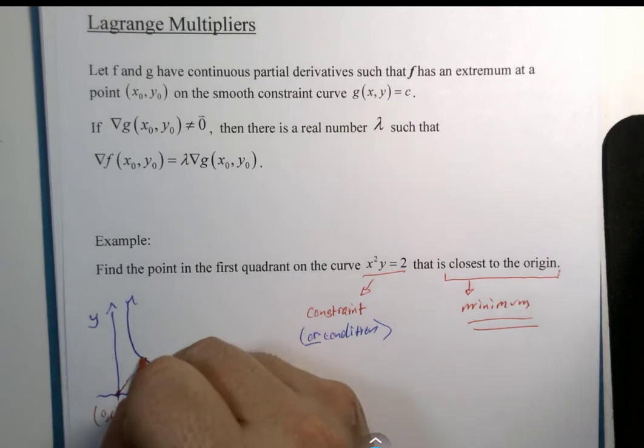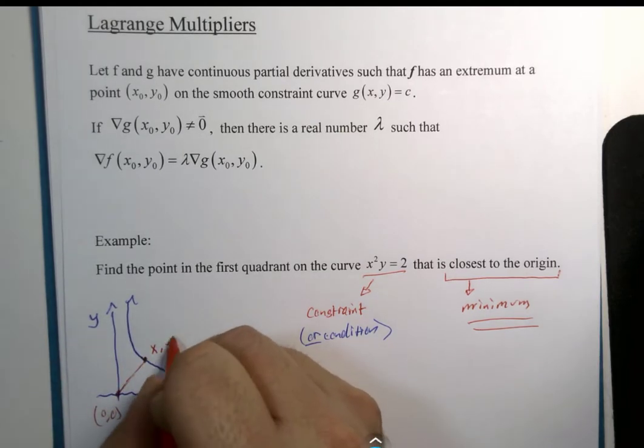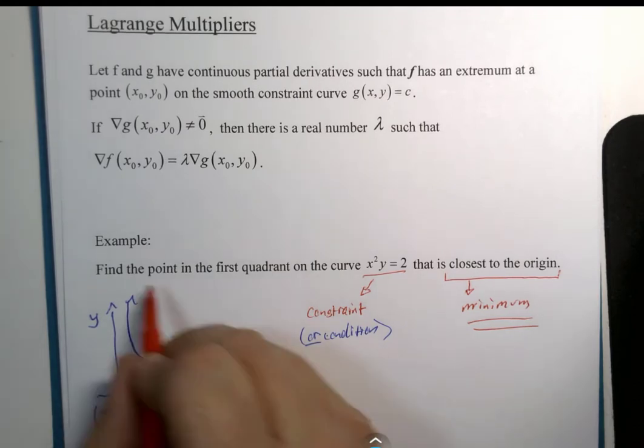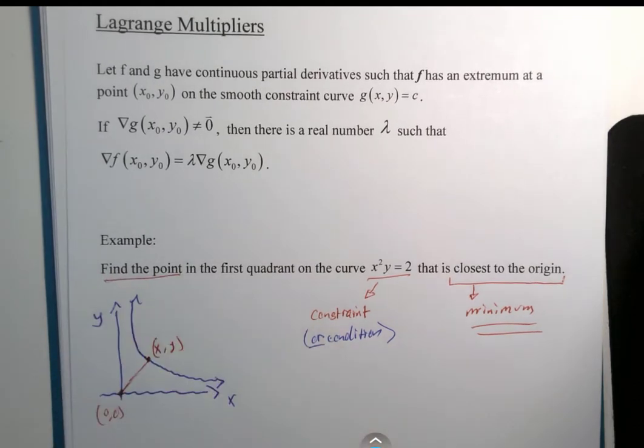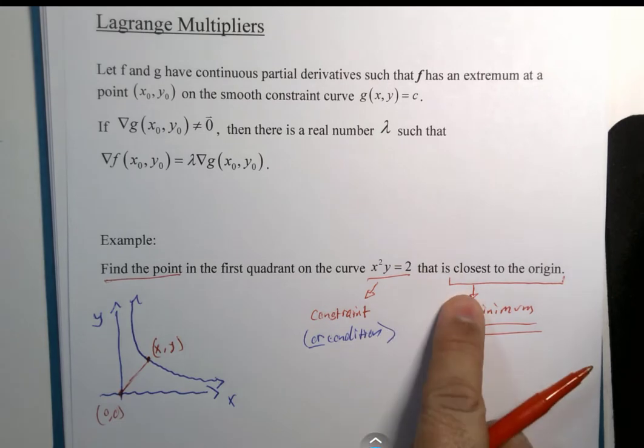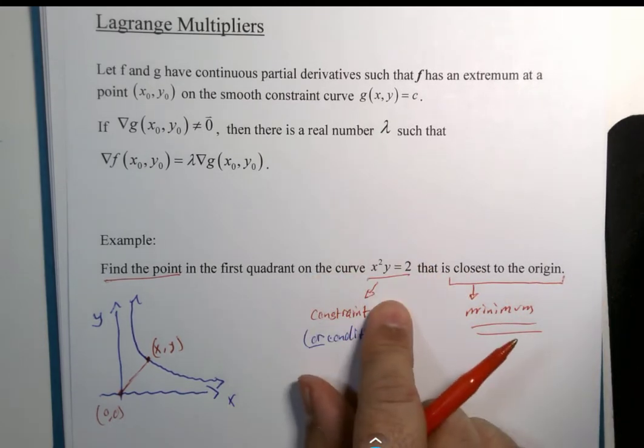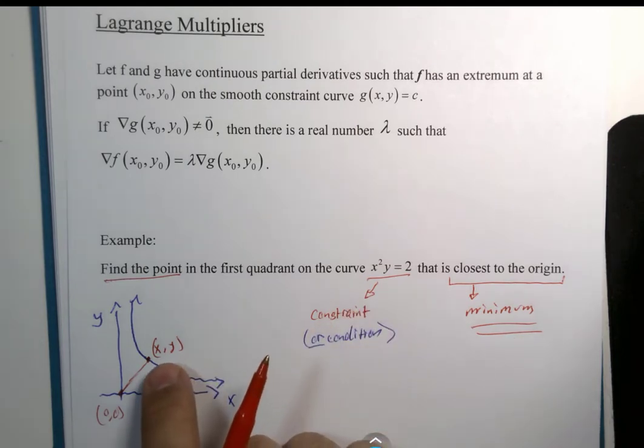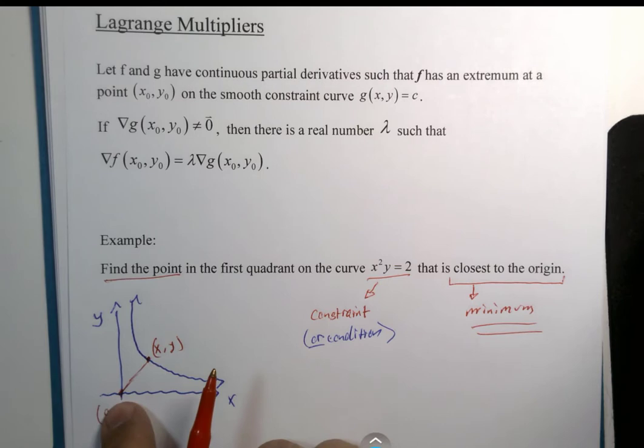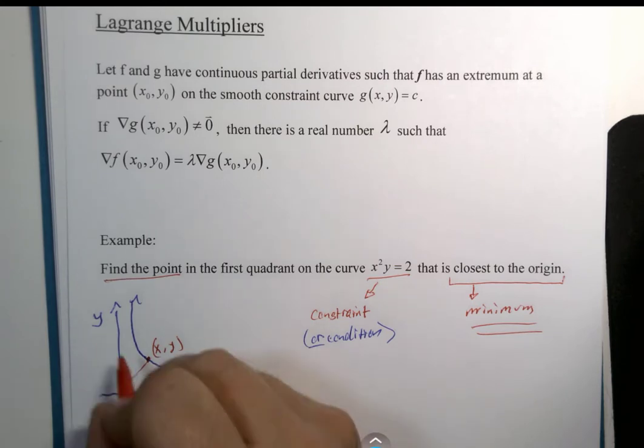We are looking for x and y coordinates of a point, because it says find the point that is closest to the origin. So, forget the condition for just a moment. How do you measure the distance from a point to the origin? What is this distance?